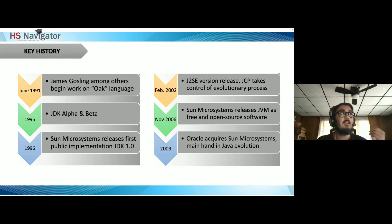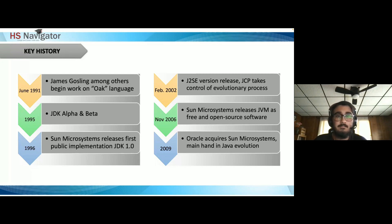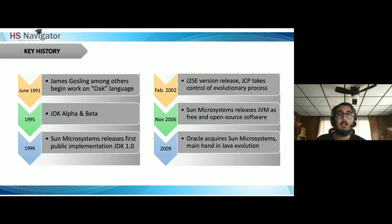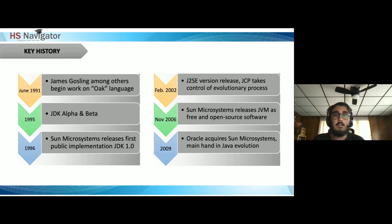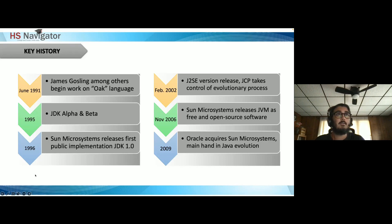In November 2006, Sun Microsystems released the JVM — Java Virtual Machine — as free and open source software, meaning anyone can use it, copy it, and the source code is openly shared. Java had long been built on proprietary software under strict copyright licensing, which is how Sun Microsystems made profits. In 2009, Oracle acquired Sun Microsystems and is now the main hand in Java's evolution.